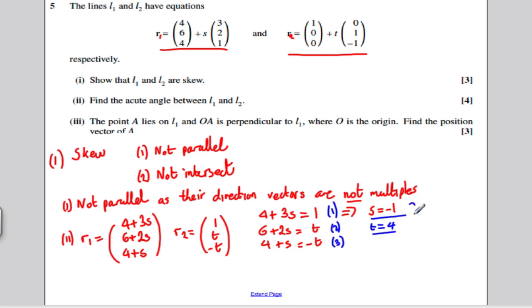Next line, we would get 6 plus 2S is equal to T. And we would get, lastly, 4 plus S is equal to minus T. I am going to call that equation 1, equation 2, and equation 3. If S was equal to minus 1, in equation 2, what would T be? Well, it would be 6 minus 2, which would be 4. So T would be 4. So from 1 and 2, you could get that S was minus 1 and T was 4.